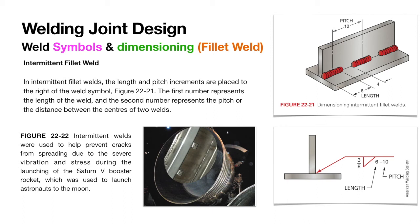In intermittent fillet welds, the length and pitch increments are placed to the right of the weld symbol. The first number represents the length of the weld, and the second number represents the pitch or the distance between the centers of two welds. Intermittent welds can be used to reduce the amount of welding and welding material, possibly reduce welding distortion, and prevent cracks from spreading. It is easier for a crack to propagate through a continuous weld than an intermittent weld, where it has to restart at the beginning of each weld. This was the end of welding symbols.